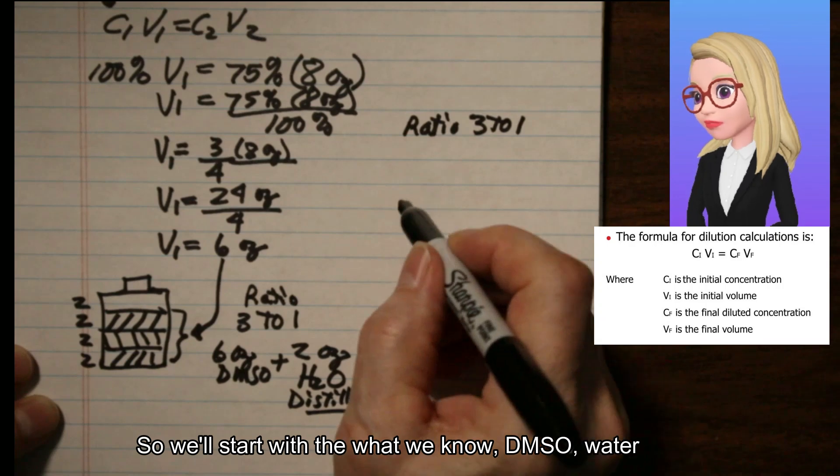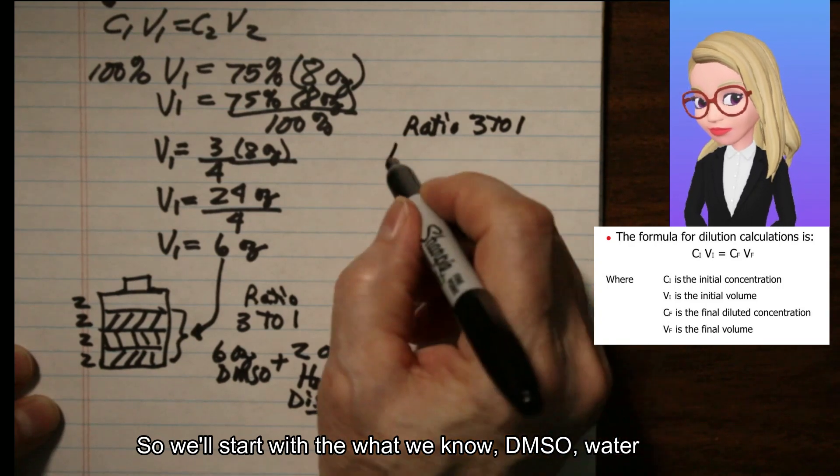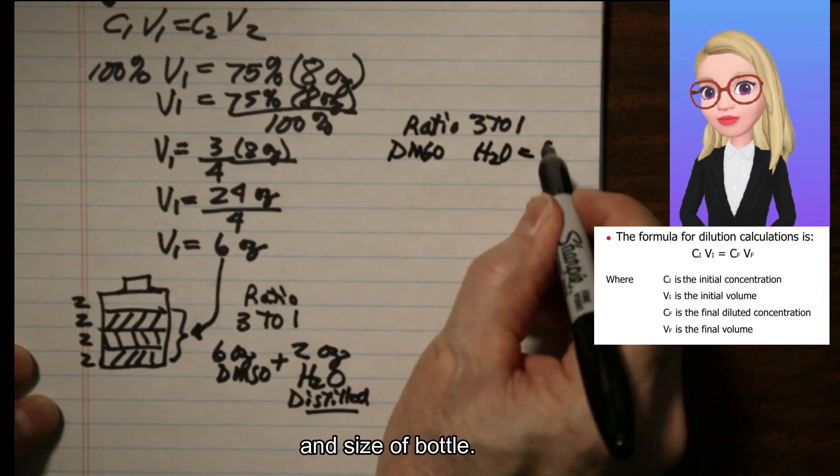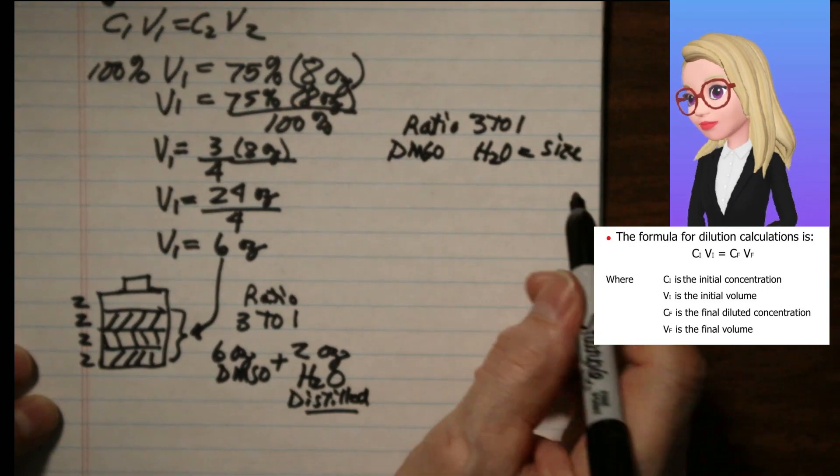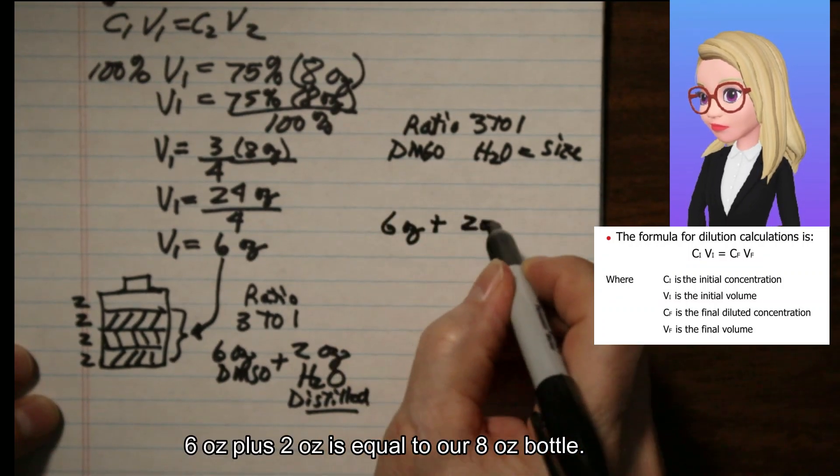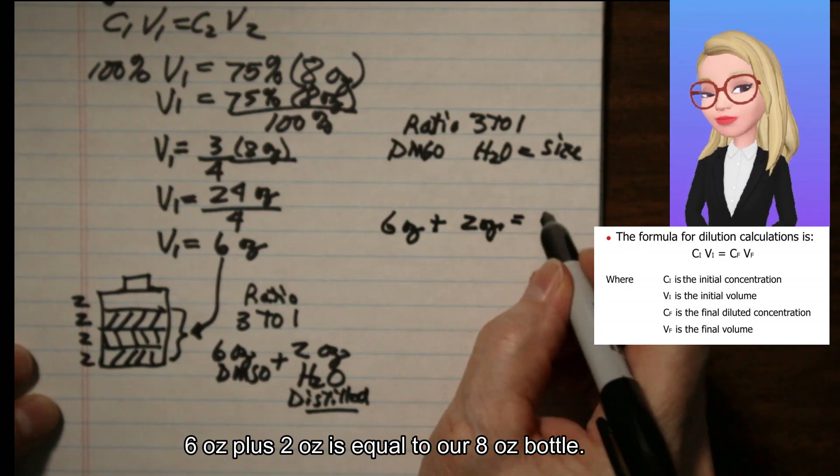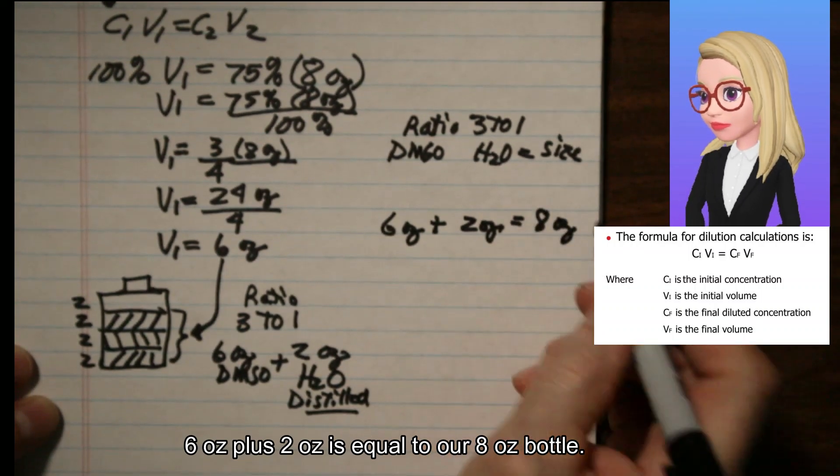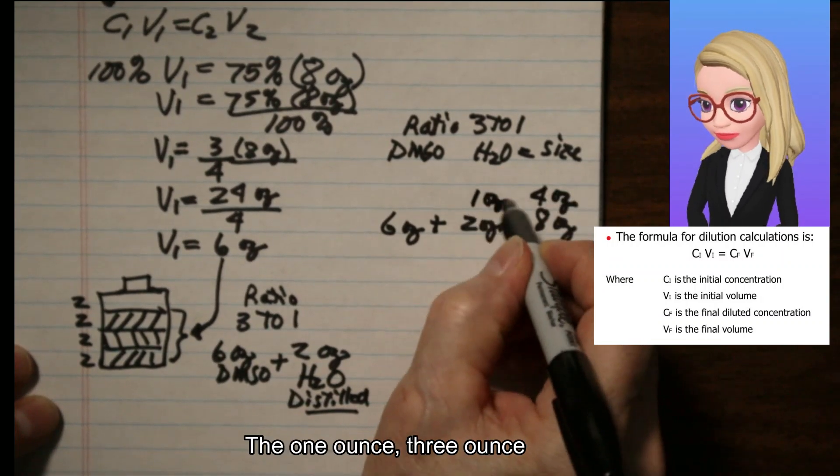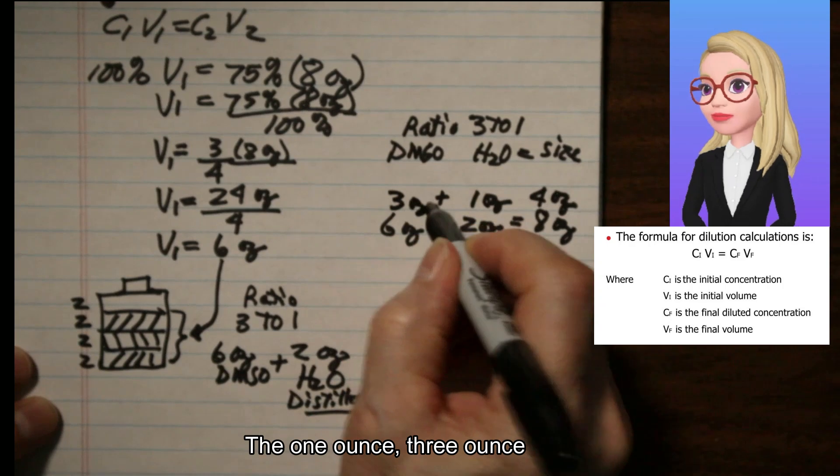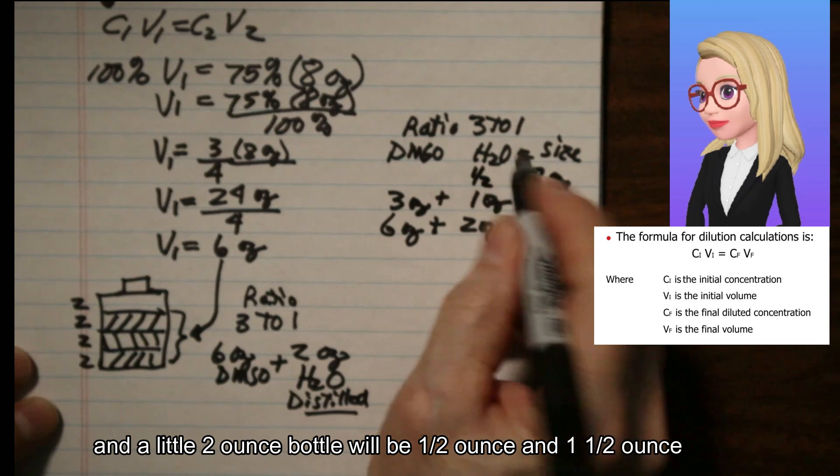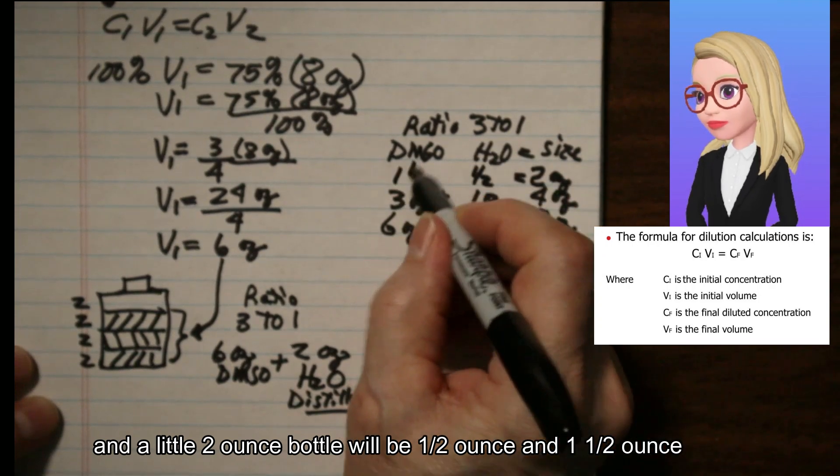We will start with what we know of the DMSO and the water size of the bottle. 6 oz plus 2 oz is equal to our 8 oz bottle. Cut it in half to a 4 oz bottle, that's 3 oz and 1 oz. A little 2 oz bottle will be 1.5 oz and 0.5 oz.